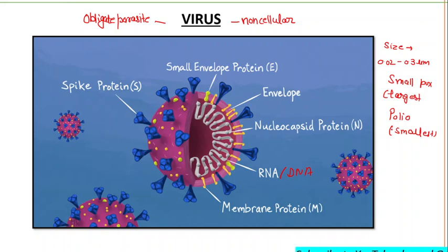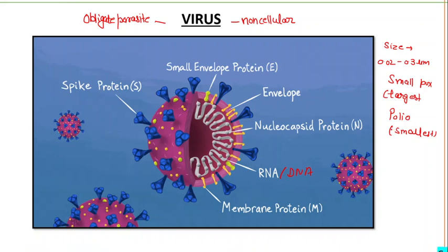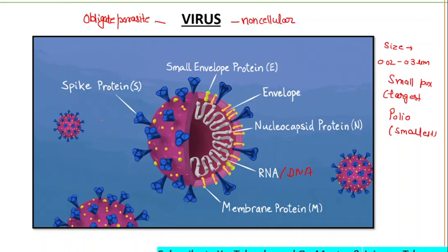The genome can then be expressed by the host cell. Every viral species has a very limited host range, meaning it can reproduce in only a small group of closely related species.